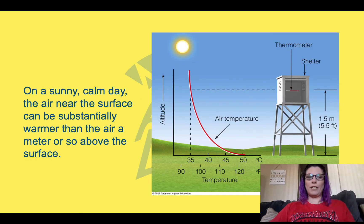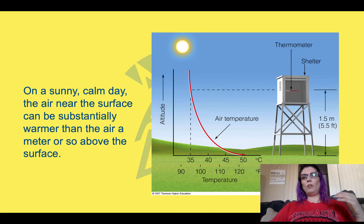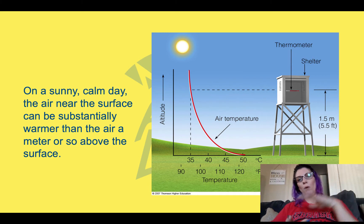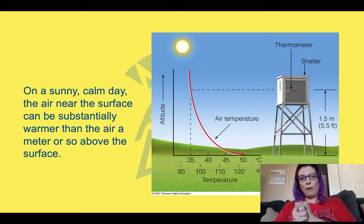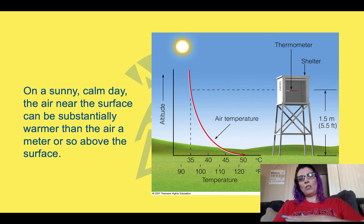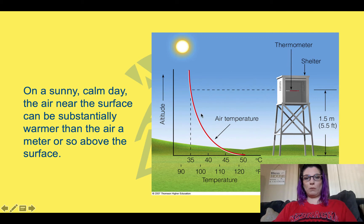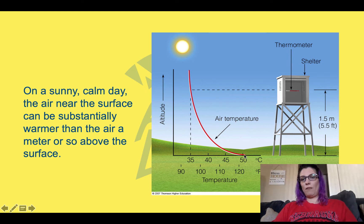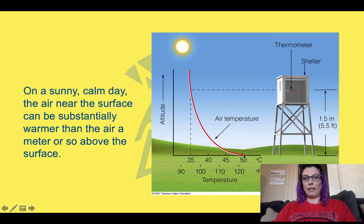On a sunny, calm day, the air near the surface can be substantially warmer than the air above it. We already talked about how we're actually warmed from below, and what that really means is that the warmest part of our atmosphere is going to be right at the surface due to convection. So you can see this is going to be like a vertical temperature profile, with temperature on the x-axis and altitude on the y-axis — about 120 to 130 degrees Fahrenheit at the surface, and it rapidly cools down.